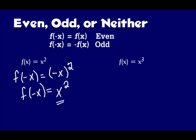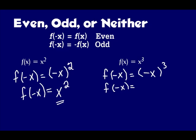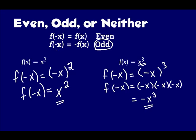Let's look at the next one. I put negative x in for x, so f of negative x equals — I put parentheses everywhere there's an x, to the third, and substitute negative x. Negative x to the third is negative x times negative x times negative x, which gives me negative x to the third. That is exactly opposite of the original x to the third, so that tells me it's an odd function. If I put negative x in and get the opposite of my original, it's an odd function.